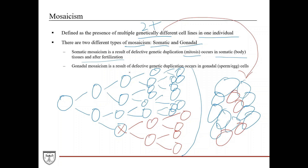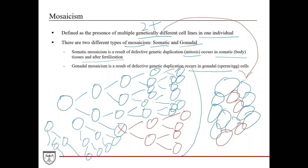Gonadal mosaicism is a result of defective genetic duplication that occurs in gonadal cells — either the sperm or the egg. You'd have a defective sperm cell and then a population of mutated sperm cells, or in the ovaries a mutation in one egg cell producing two populations of eggs that are genetically different. Mosaicism can occur by multiple mechanisms: a point mutation, non-disjunction, anaphase lag, or other genetic errors. The bottom line is it produces multiple genetically different cell lines.